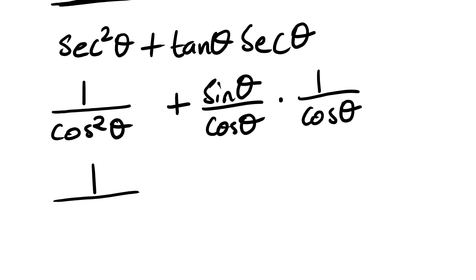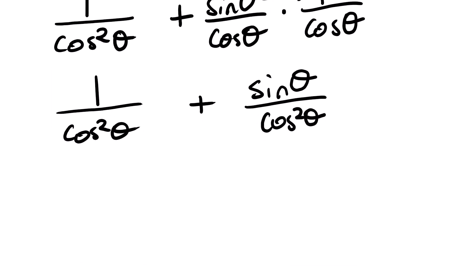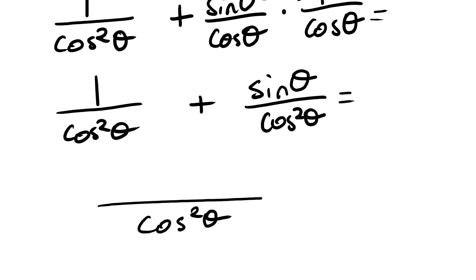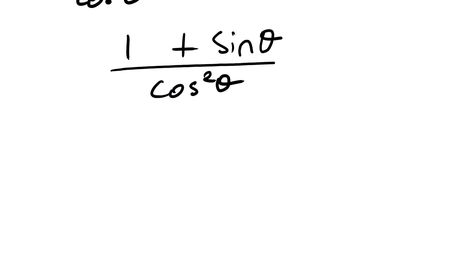From here we have 1 over cos squared theta plus sine theta over cos squared theta. Then from here we simplify — we have 2 fractions. The denominators are the same, so we can simply take one denominator and add our numerators. We only do this if we have the same denominator.